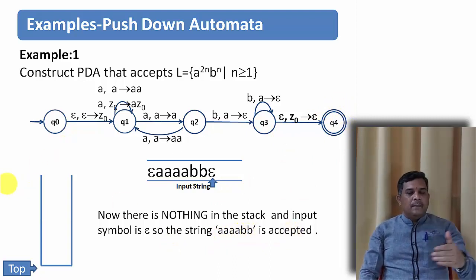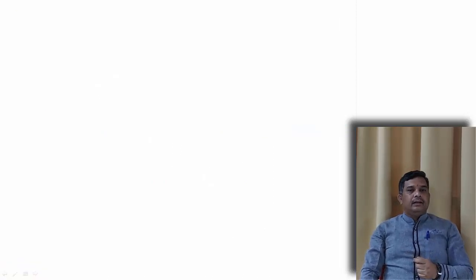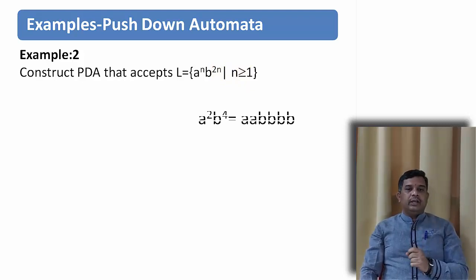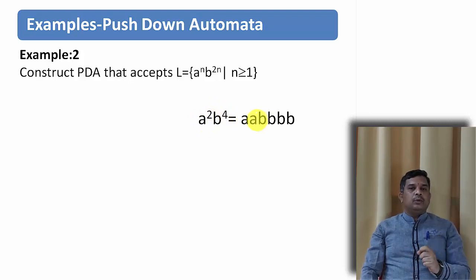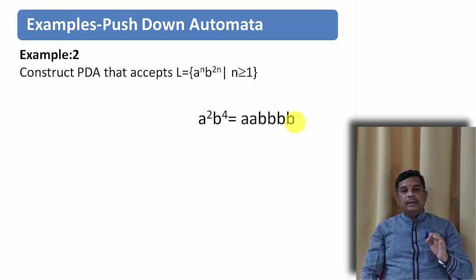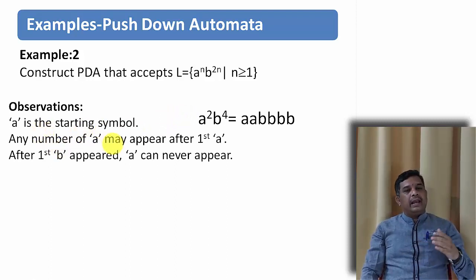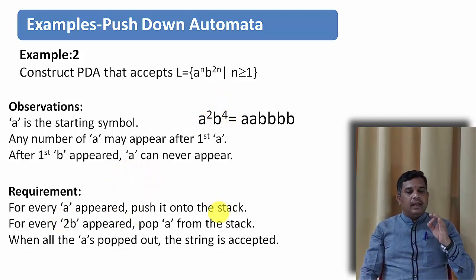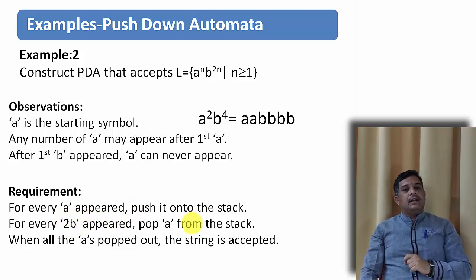Now let us modify this example a little bit. Construct a PDA that accepts the language a to the power n, b to the power 2n, with n greater than or equal to 1. The string will be in the format a squared b to the power 4 — meaning 2 a's followed by 4 b's. So the number of b's will be twice the number of a's. The observation: when a's appear we push each a onto the stack, and whenever two b's appear we pop a single a from the top of the stack. When the string is completed, we say it is accepted.